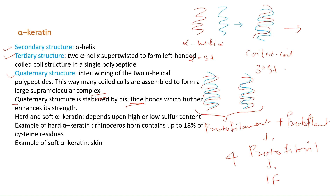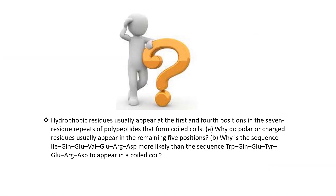Alpha keratin can be classified into soft and hard keratin, depending on sulfur content. Hard keratin has more sulfur — for example, rhinoceros horn contains 18% cysteine residues, leading to more disulfide bond formation. Soft keratin, such as skin, has fewer cysteine residues and fewer disulfide bonds. More disulfide bonds make the keratin harder.